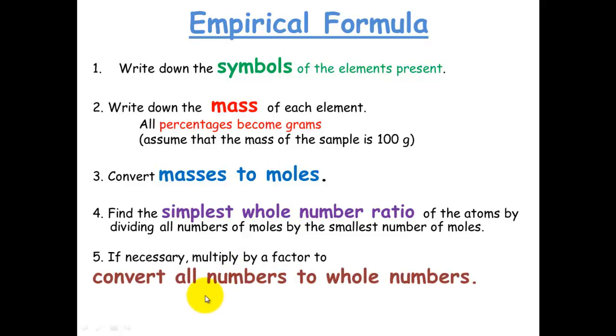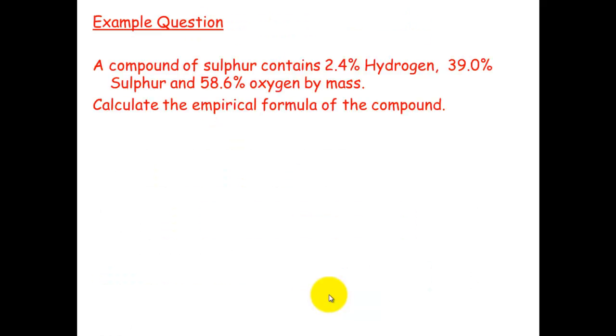And last but not least, if necessary, convert all of those numbers to whole numbers. I'm going to show you some examples which will make this make a bit more sense. So here's an example question. A compound of sulfur contains 2.4% hydrogen, 39% sulfur, and 59% of oxygen by mass. Calculate the empirical formula of the compound.